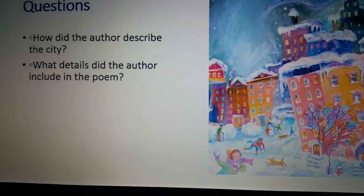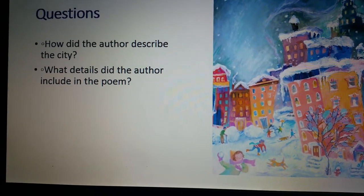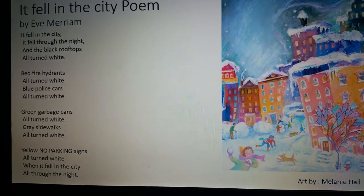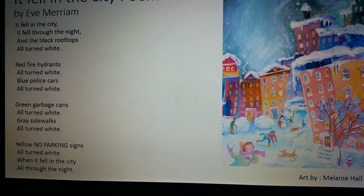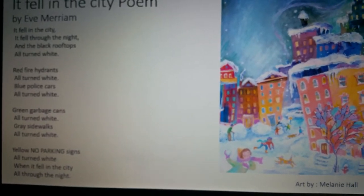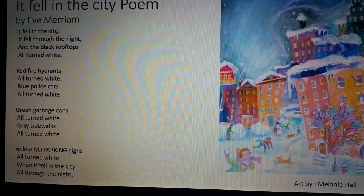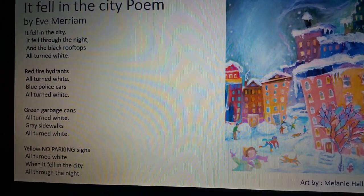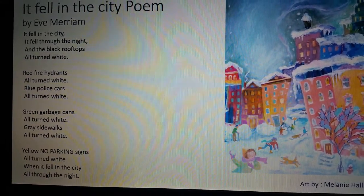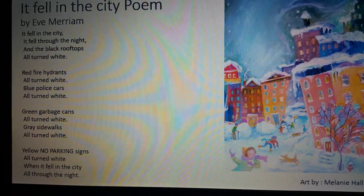The first question we want to ask is: how did the author describe the city? To do so, let's go back to the reading. The author described the city as being covered in white. The fire hydrant changed from red to white, the blue police cars changed from blue to white, and even the yellow no parking sign changed from yellow to white.